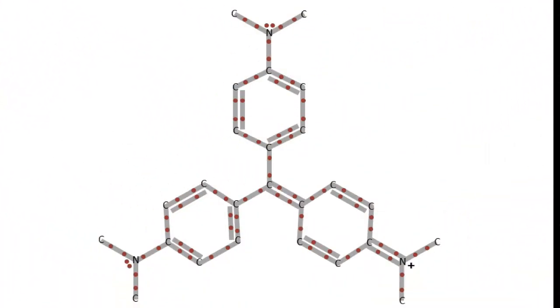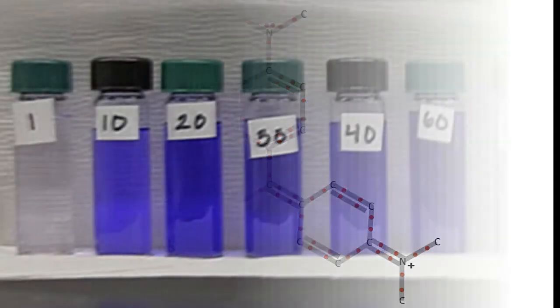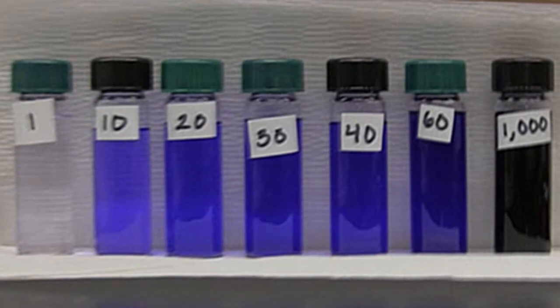If we could zoom in to the molecular level, the crystal violet molecule would look something like this. There are also some hydrogen atoms in the molecule, but they aren't shown here because it would get very crowded. We can see that the more crystal violet powder we add to the water, the darker the solution becomes.